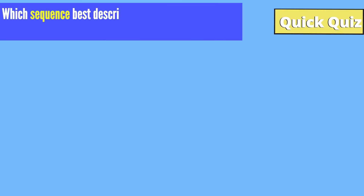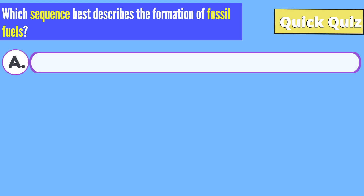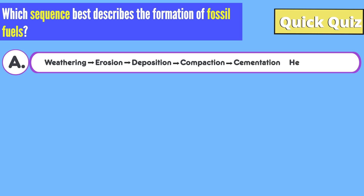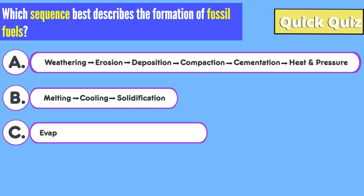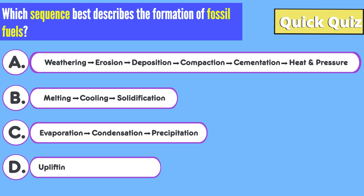Quick quiz recap: which sequence best describes the formation of fossil fuels? A. Weathering, erosion, deposition, compaction, cementation, heat and pressure. B. Melting, cooling, solidification. C. Evaporation, condensation, precipitation. D. Uplifting, folding, cracking. Guiding question — think about the processes we discussed. Which sequence aligns with the journey from sediments and organic materials to fossil fuels?